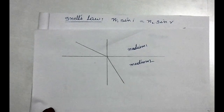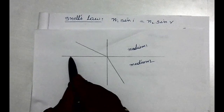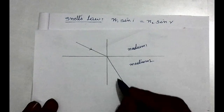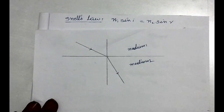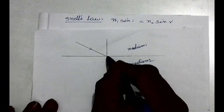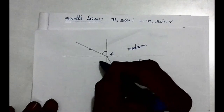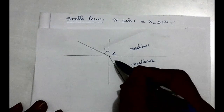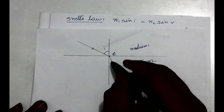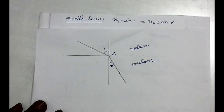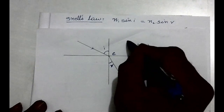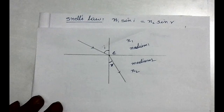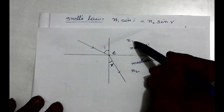Snell's Law. Let us assume that this is medium 1 and this is medium 2, this is the border line, and a ray is traveling from medium 1 to medium 2. The ray undergoes refraction. At point C, this is the normal line. The angle between the incident ray and the normal is i, the angle of incidence. The angle between the refracted ray and the normal is the angle of refraction. The refractive index of medium 1 is n1 and that of medium 2 is n2. Snell's Law tells us the relation between the angle of incidence, angle of refraction, and the refractive indices of the two mediums.